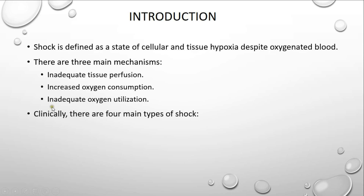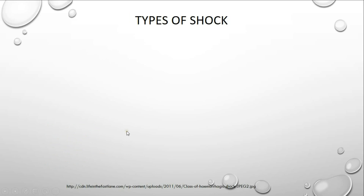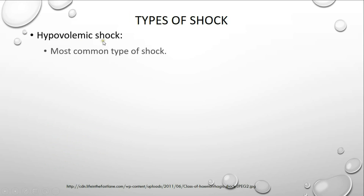Clinically, we have four main types of shock. The first is hypovolemic shock, which is the most common type. The second is cardiogenic shock, the third is distributive shock, and lastly is obstructive shock. Let's have a quick description of each of these types.